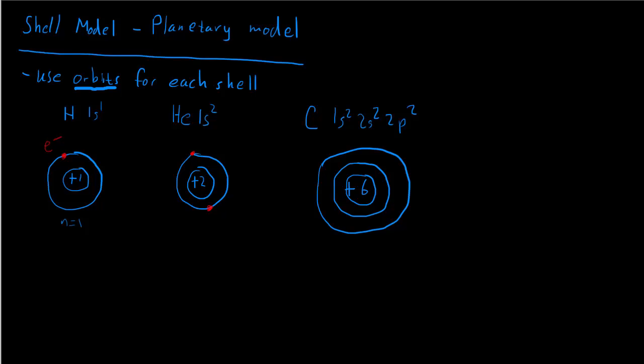Putting electrons in as little dots: we've got two electrons in the n equal one shell, and then in the n equal two shell we've got four electrons — one, two, three, four. I'm going to separate them from each other because electrons repel each other, so I'll try to move them apart. But again, this is just a picture we're drawing to represent what's going on.